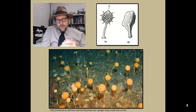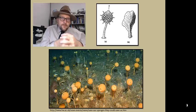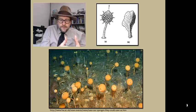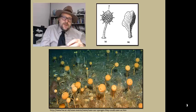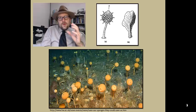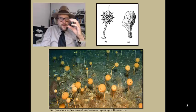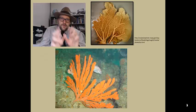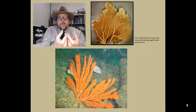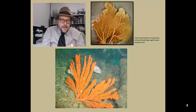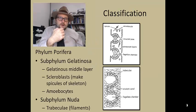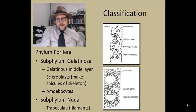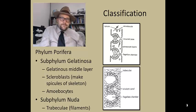Sponges can take advantage of water currents in the ocean to maximize the amount of food that passes into their chambers. Some sponges are stalked so they can be located in the faster currents above the ocean floor. Others are fan-shaped, spreading out perpendicular to the ocean currents to capture floating food.